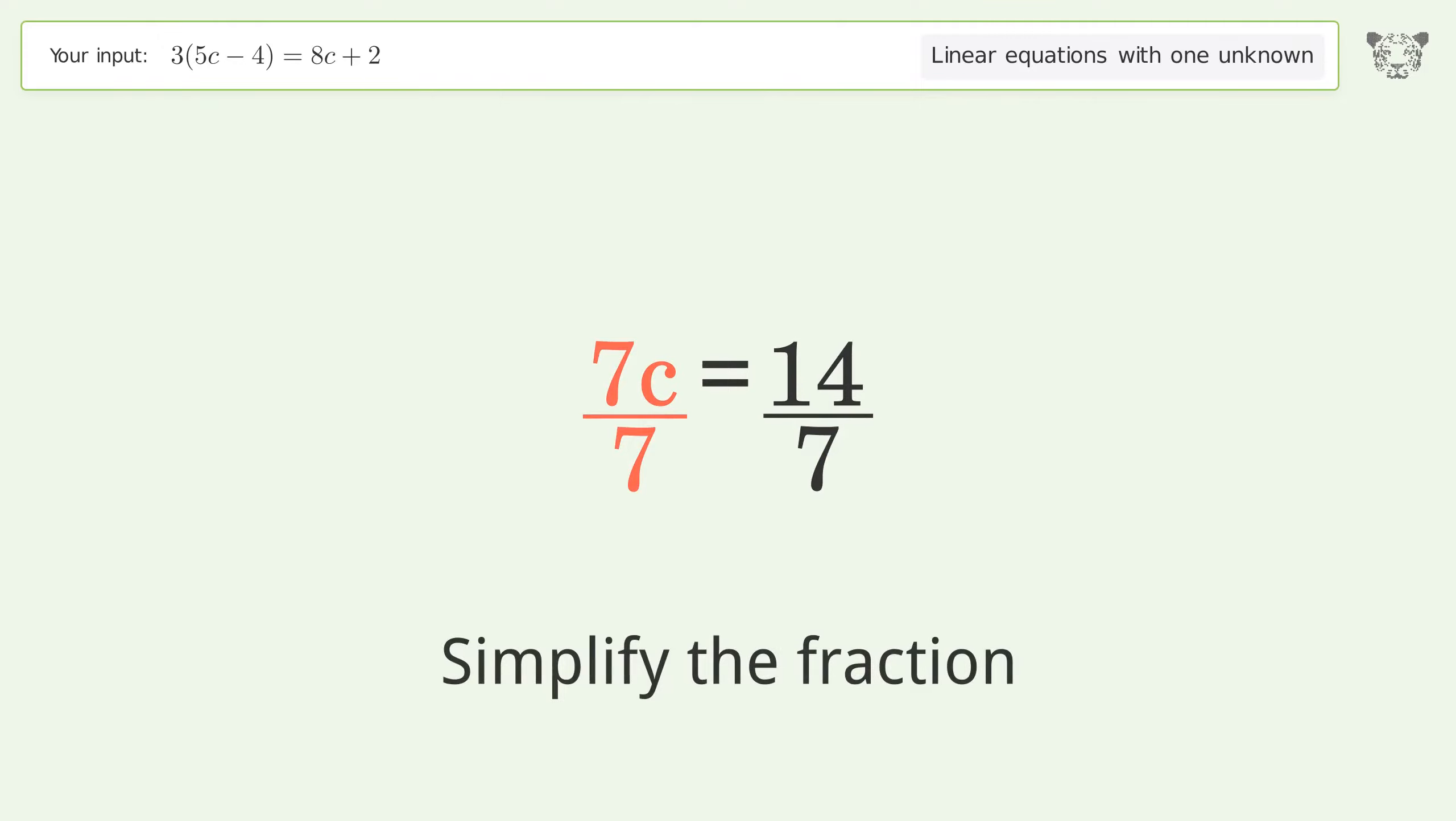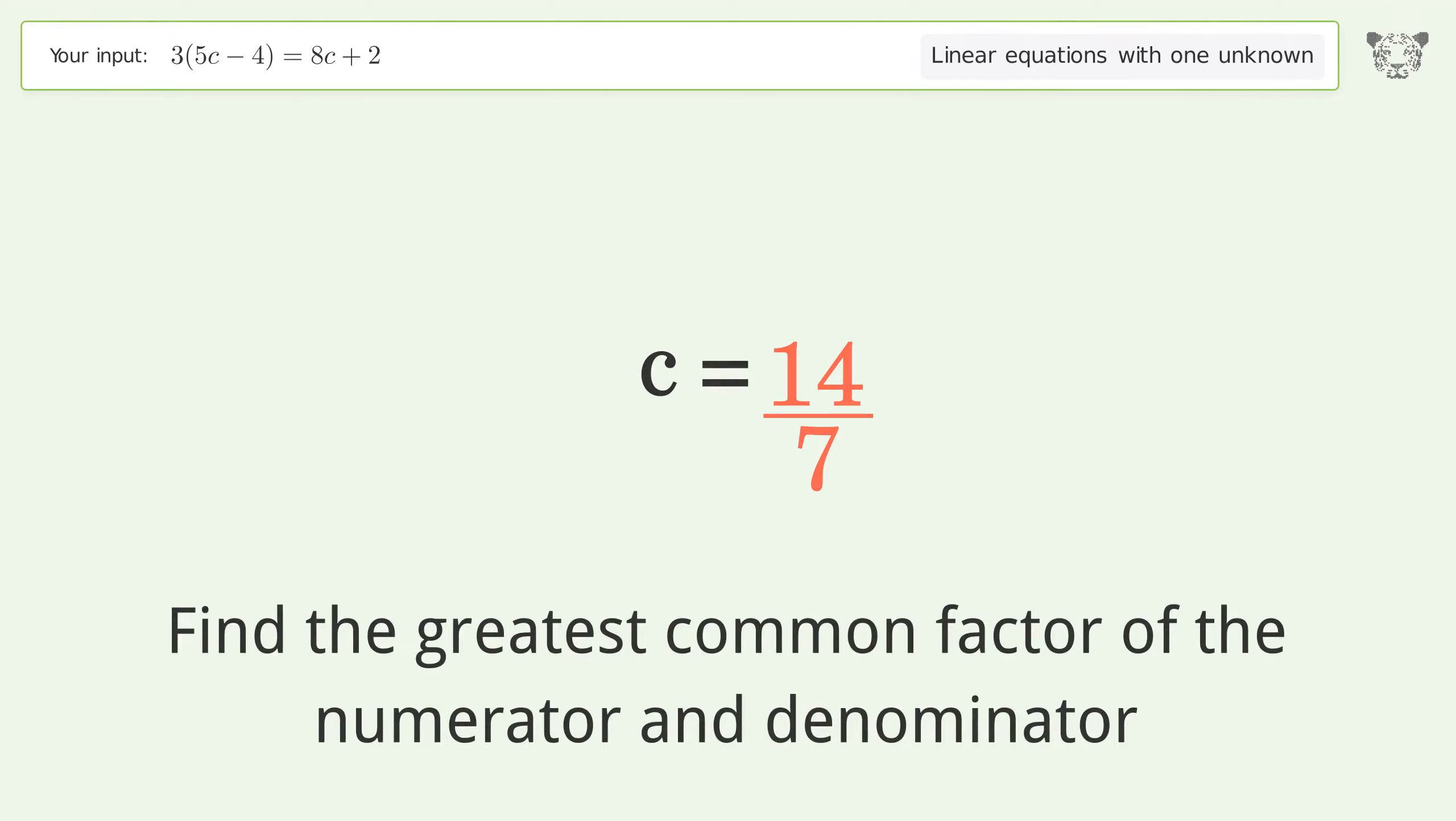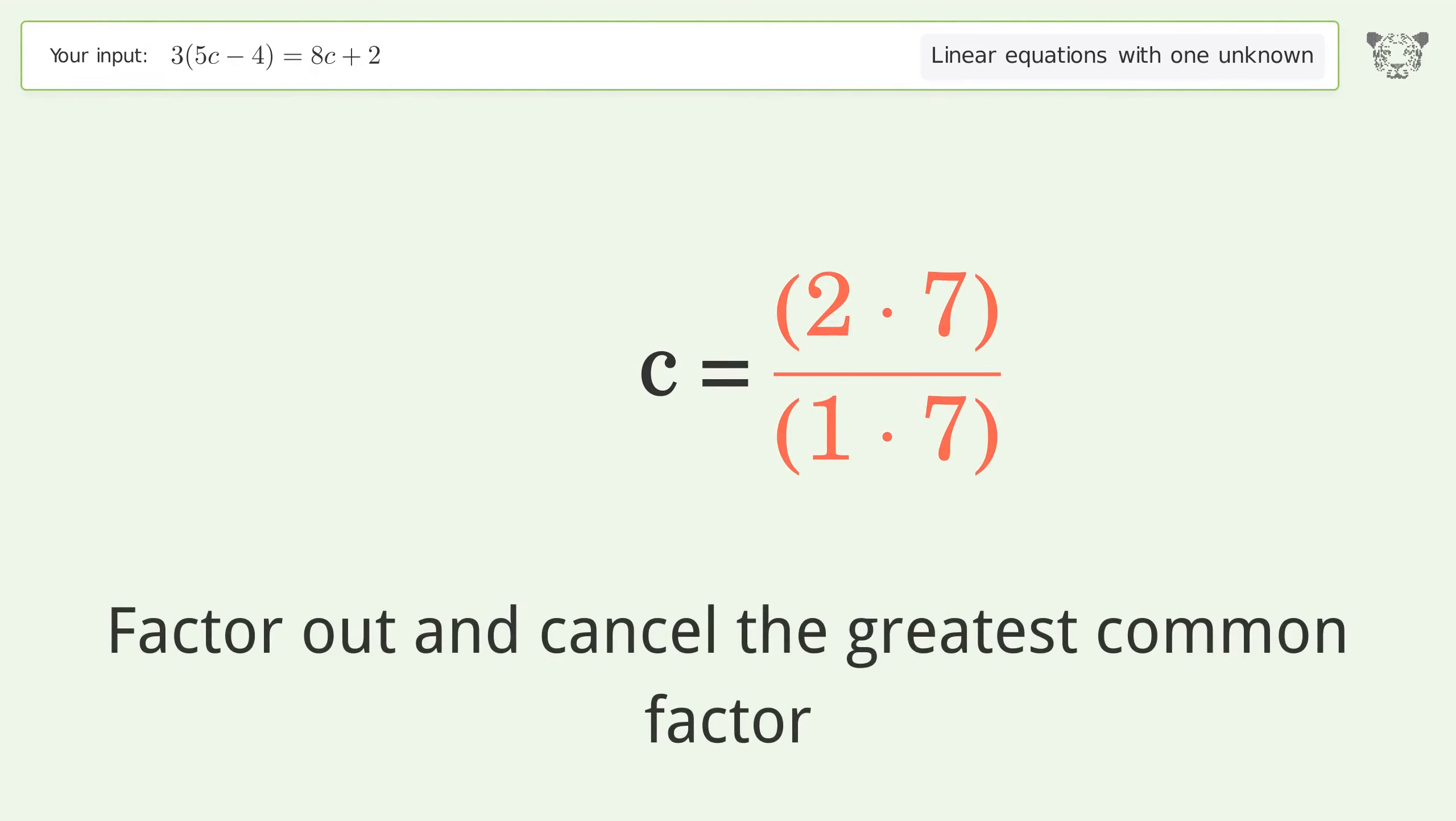Simplify the fraction. Find the greatest common factor of the numerator and denominator. Factor out and cancel the greatest common factor.